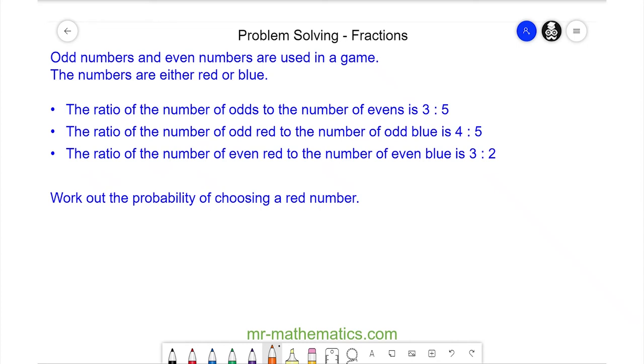Welcome to our problem solving question on fractions and ratio. We've been told that odd numbers and even numbers are used in a game, and the numbers are either red or blue. The ratio of the number of odds to the number of evens is 3 to 5. The ratio of the number of odd red to odd blue is 4 to 5, and even red to even blue is 3 to 2. We're going to work out the probability of choosing a red number.